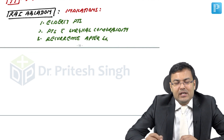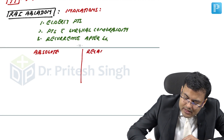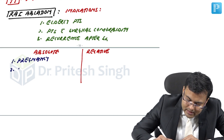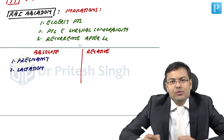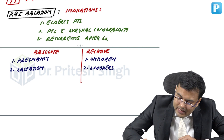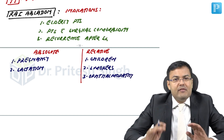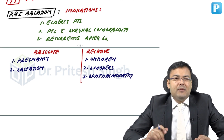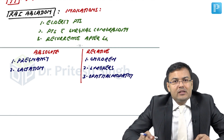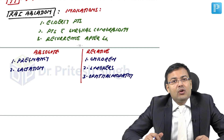Contraindications of radioactive iodine ablation: absolute contraindications are pregnancy and lactation (to avoid gamma ray exposure to the fetus). Relative contraindications are children (gamma ray exposure concern), smokers, and ophthalmopathy — because radioactive iodine ablation causes worsening of ophthalmopathy in smokers and those with ophthalmopathy.